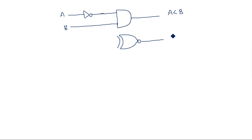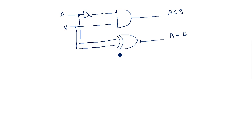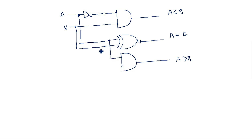For A equal to B, we use an XNOR gate with A and B both in true form. For A greater than B, which is AB-bar, we use another AND gate where A is in true form and B is complemented through a NOT gate to get B-bar. This completes the simple logic circuit for the one-bit comparator.